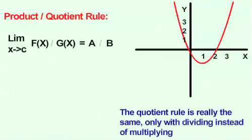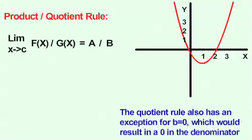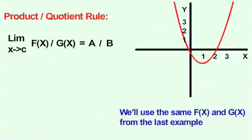The quotient rule of limits is really the same, only we divide the limits instead of multiplying. The quotient rule also has an exception for b equals 0, which would result in a 0 in the denominator. We'll use the same f of x and g of x from our last example to demonstrate this.